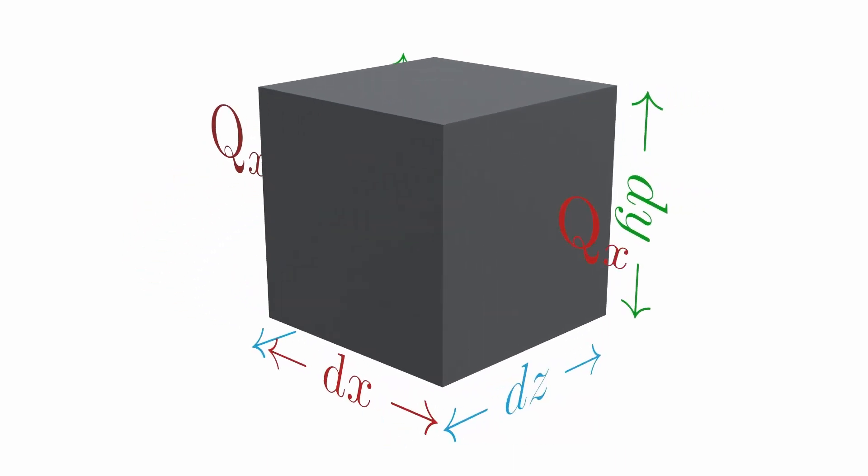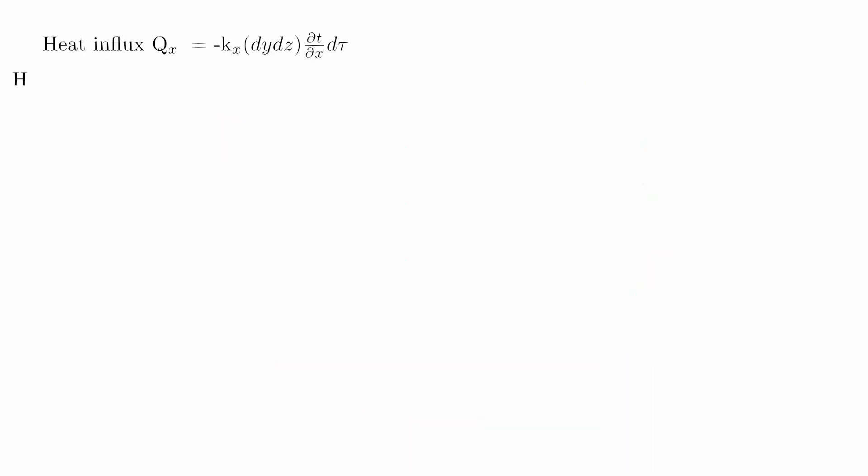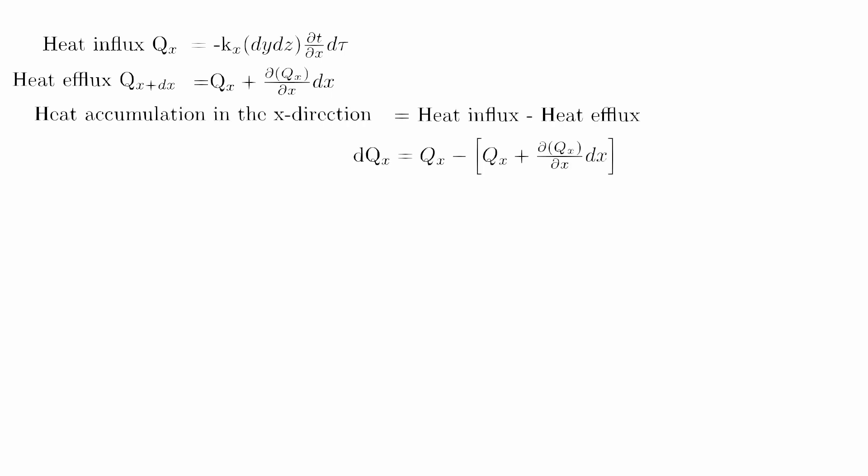At the same time interval, heat flowing out of the control volume in x direction is qx+dx, called heat efflux. Heat accumulation in x direction is heat influx minus heat efflux. As you can see on your screen, this is the heat accumulation in x direction.